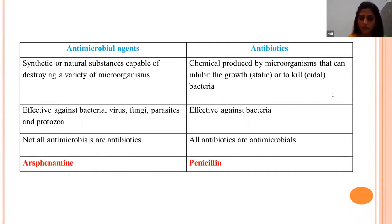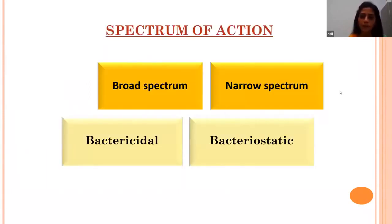The first antimicrobial agent was arsphenamine, discovered in 1908, also called Salvarsan or compound 606, used against syphilis and African trypanosomiasis. The first antibiotic, penicillin, was discovered by Sir Alexander Fleming, who observed that molds of Penicillium inhibited Staphylococcus aureus growth on petri plates. He determined that chemical substances produced by Penicillium notatum could inhibit bacterial growth, and named the antibiotic penicillin.